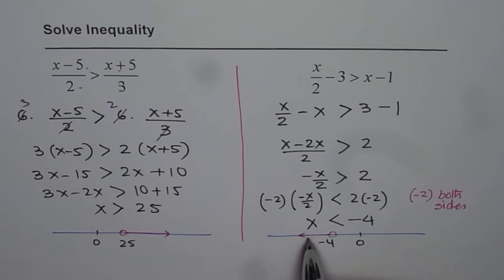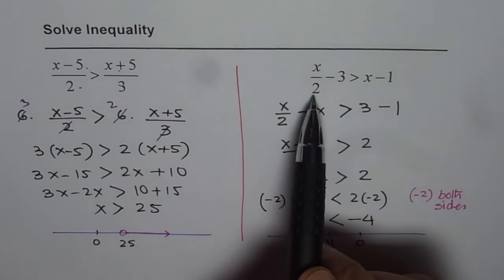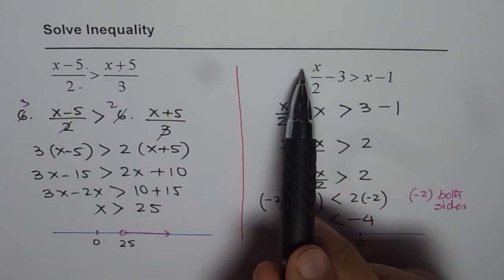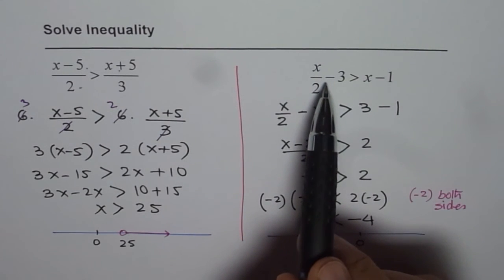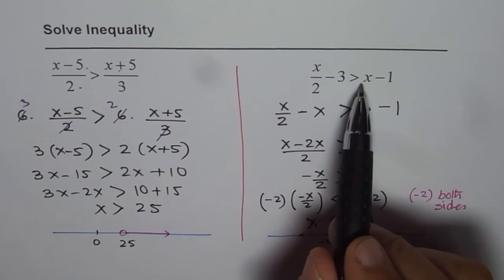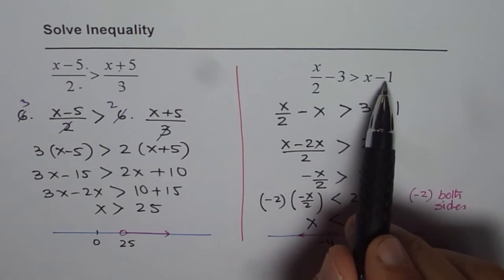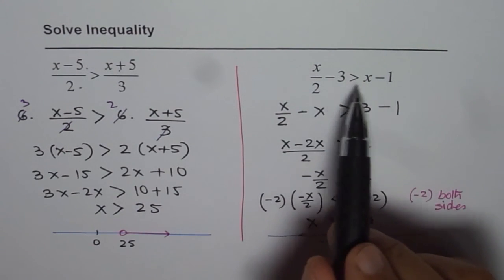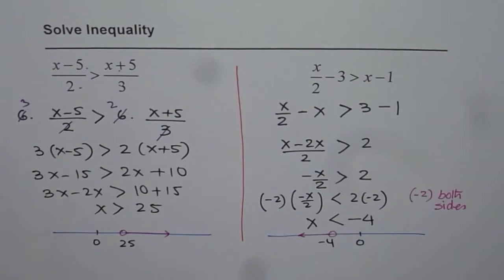But if I write a number which is on the left side, a part of solution, which is minus 6, let us say. Minus 6 divided by 2 is minus 3. Minus 3 minus 3 is minus 6. Now if I do greater than minus 6, minus 1 is minus 7. So minus 6 is indeed greater than minus 7. That makes the inequality true. So that is the correct answer.